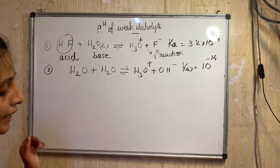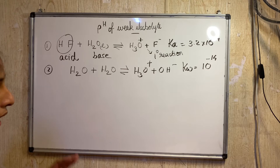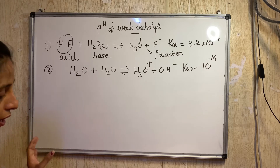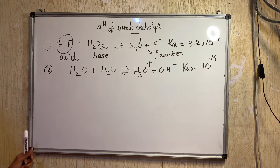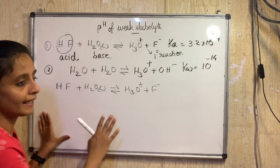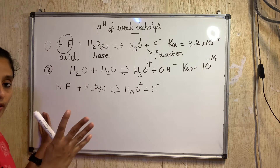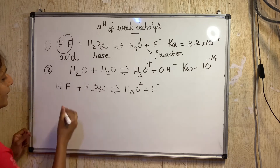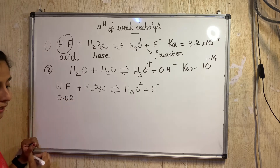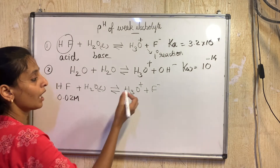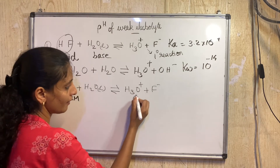Step 4: we enlist in a table the following values for each species in the primary reaction — initial concentration, change in concentration on proceeding to equilibrium in terms of alpha (degree of ionization), then equilibrium concentration. For HF, the initial concentration is 0.02 M. For H2O — pure liquid — we ignore concentration. Initially, H3O⁺ and F⁻ concentration is 0.